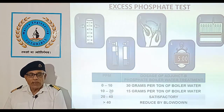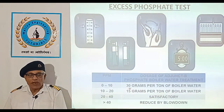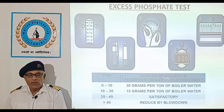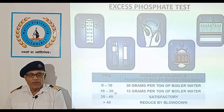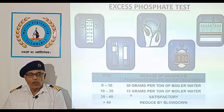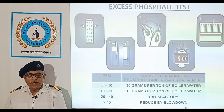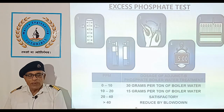If the value of excess phosphates is between 0 to 10 ppm, we need to add 30 grams per ton of boiler water. Between 10 to 20 ppm, we need to add 15 grams per ton of boiler water. Within 20 to 40 ppm, it is the satisfactory range. But if it exceeds 40 ppm, we need to reduce it by blowdown.